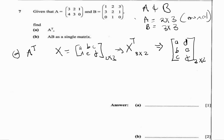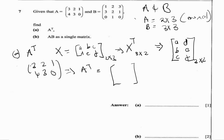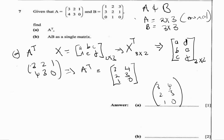Now let's apply this to the first question. Matrix A is [3, 2, 1 / 4, 3, 0]. To get the transpose, we convert rows to columns, giving us: [3, 4], [2, 3], [1, 0]. So the transpose of A is the 3 by 2 matrix with rows [3, 4], [2, 3], and [1, 0].